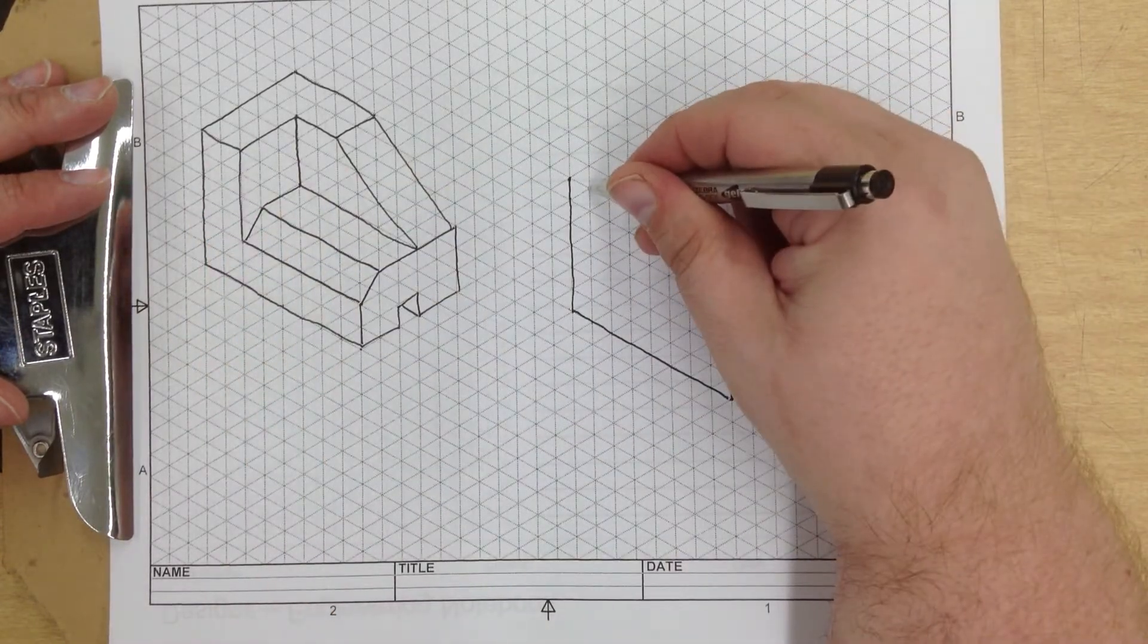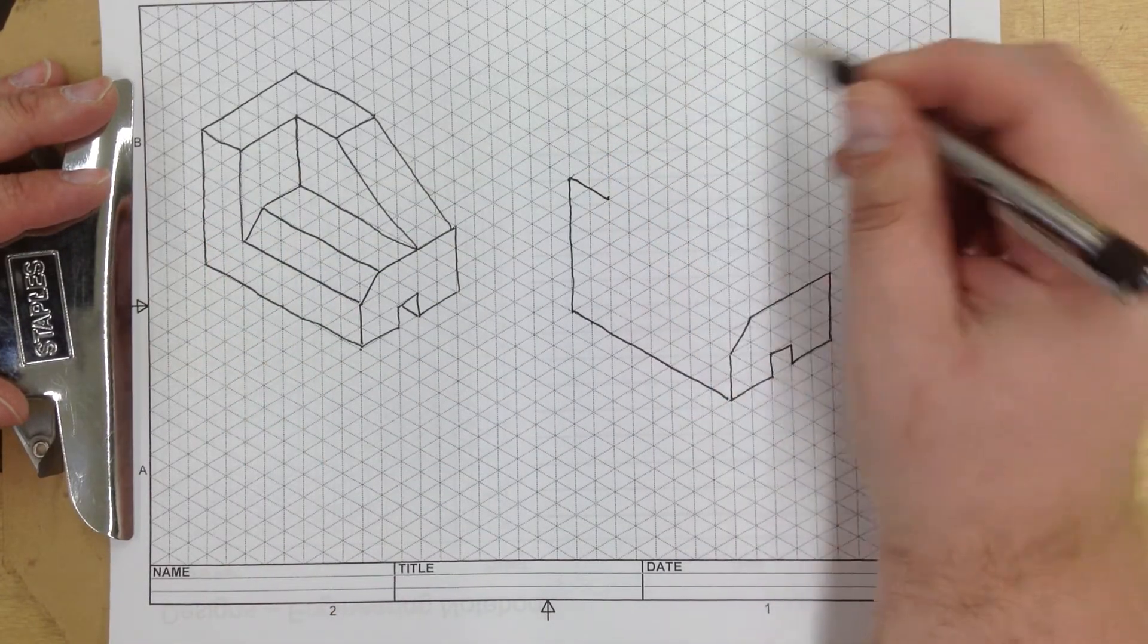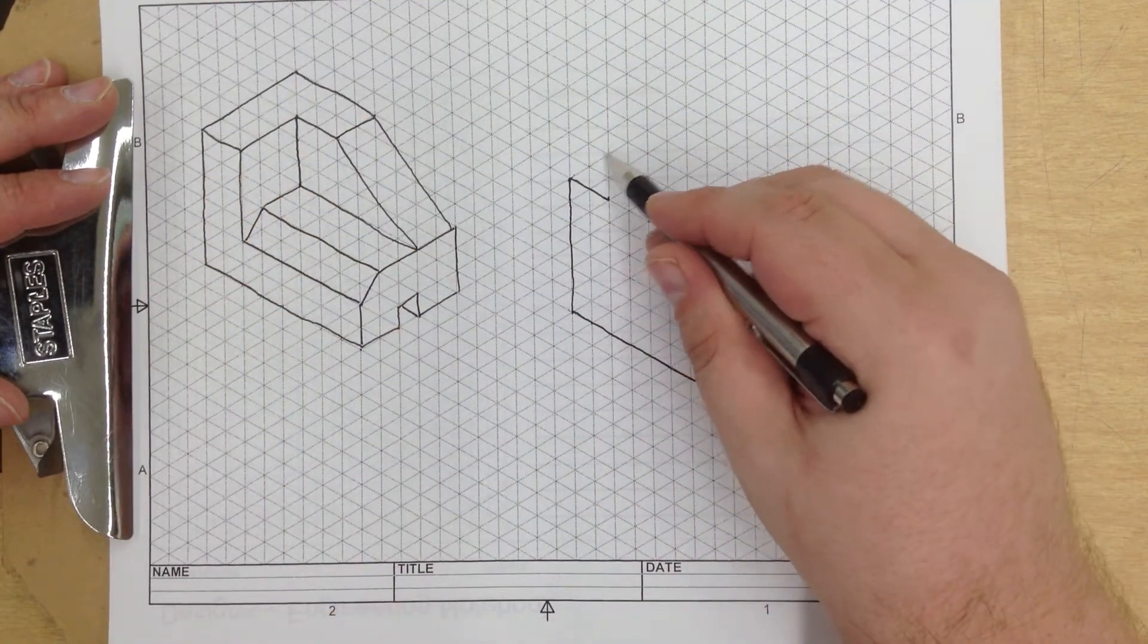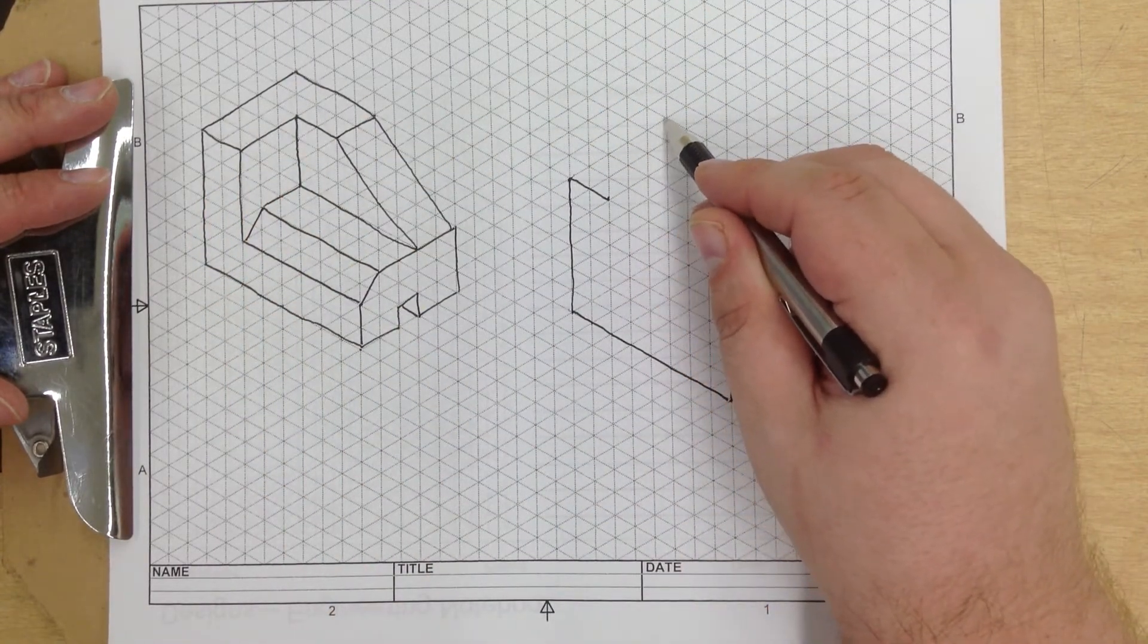Next it comes two over. One, two. And then one, two, three, four, five. One, two, three, four, five.